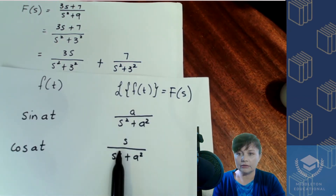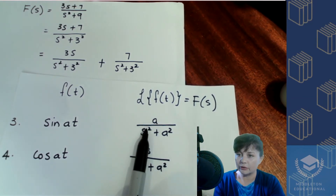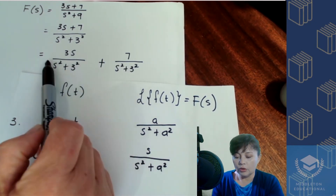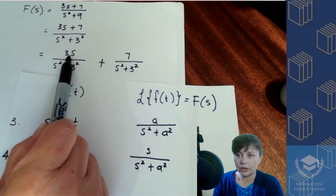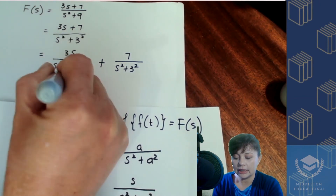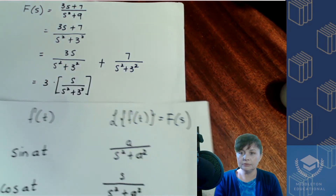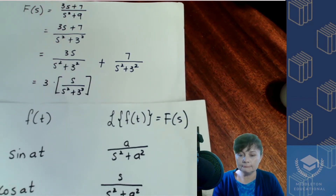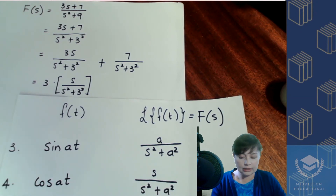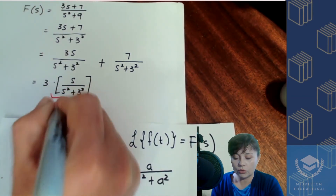Now we have the denominator in the correct form matching both number three and number four, and each fraction has one term in the numerator. Looking at the first term, the numerator contains s, which matches the form of number four on the table. So we can write the first term as three times s over s squared plus three squared, which is exactly the form of entry number four.